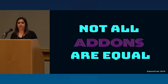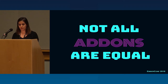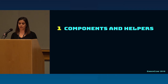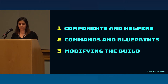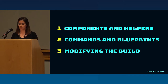Not all add-ons are equal, and we are going to see different cases and how to test each one of them. I'm going to split the add-ons into three categories: those that add components and helpers to your app; add-ons that add commands and blueprints to Ember CLI; and the third case — which is our add-on Ember Unit Nice Errors — those that change or step into the build process of Ember CLI.